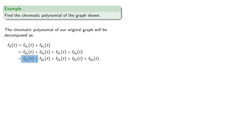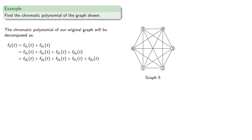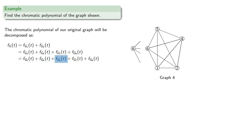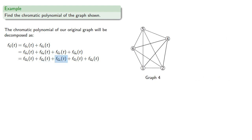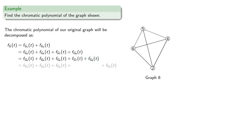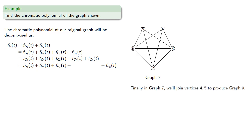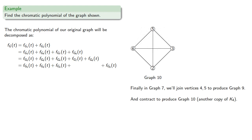Now remember, graph 5 is actually K6, graph 6 is K5, graph 4 is K5, and graph 8 is K4 — so we already know what those chromatic polynomials are. The only one we don't know is the chromatic polynomial for graph 7. Finally, in graph 7, we'll join vertices 4 and 5 to produce graph 9 and contract to produce graph 10, another copy of K4. So the chromatic polynomial for graph 7 will be those of graph 9 plus graph 10.